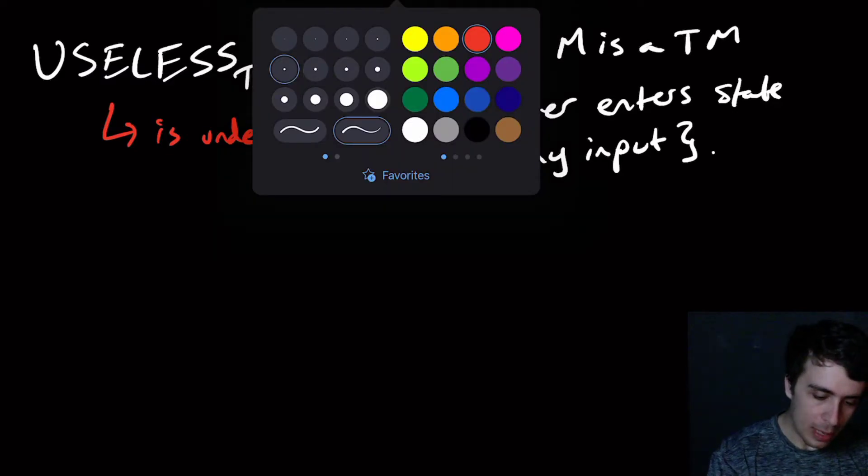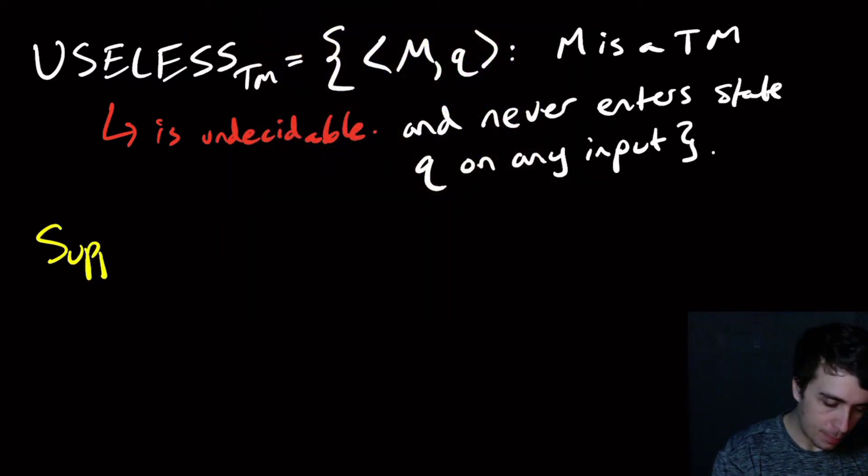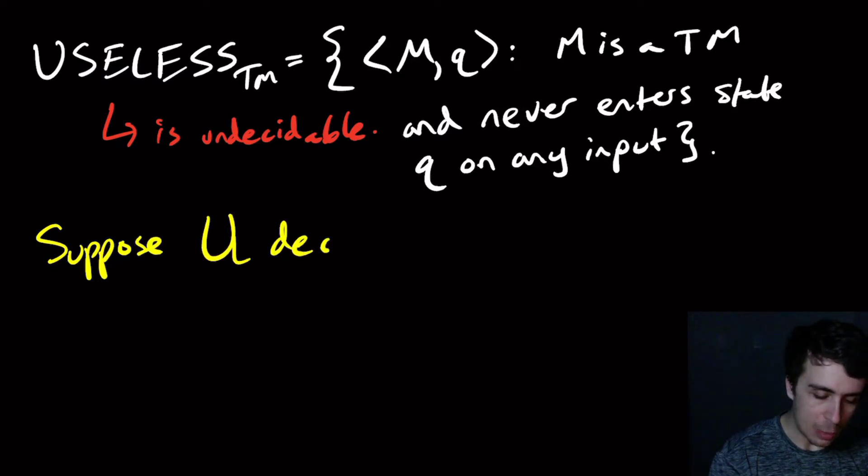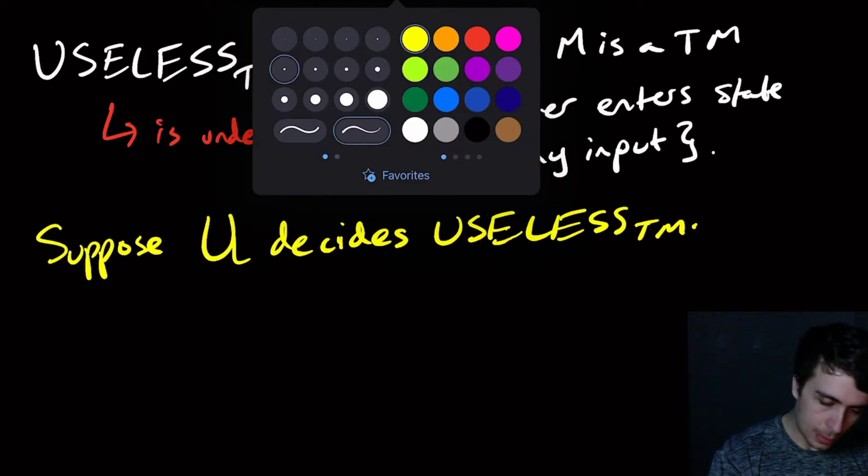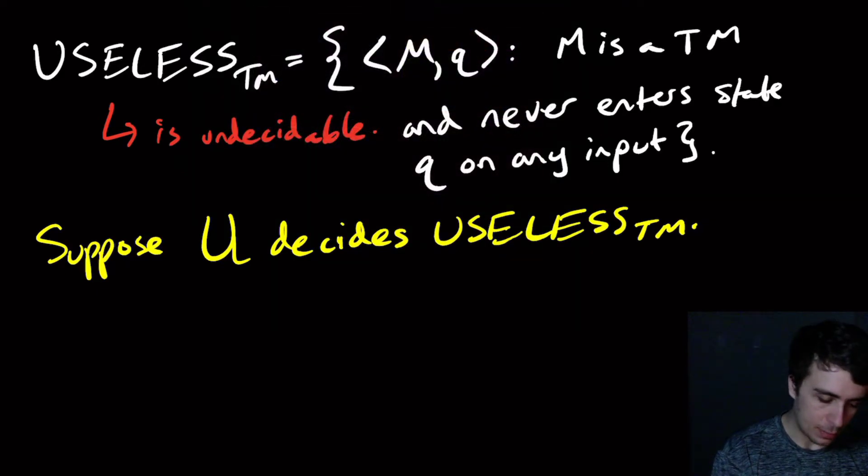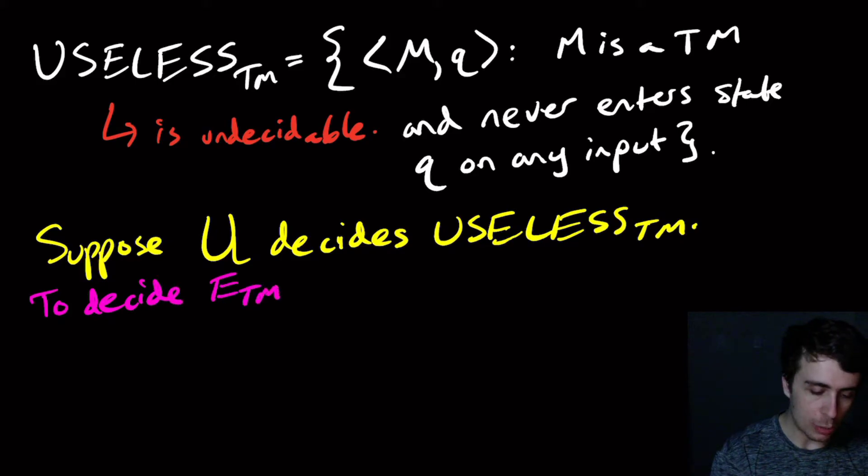So we're going to suppose then that some machine U will decide this. Let's say U decides USELESS_TM, then let's try to solve the emptiness problem. It's actually very quick. We're going to try to decide the emptiness question E_TM.